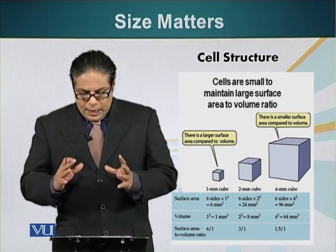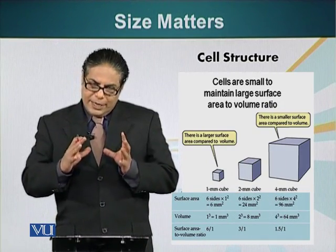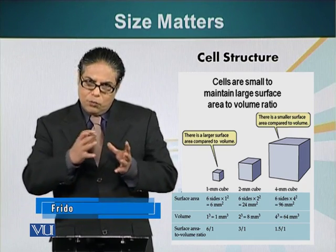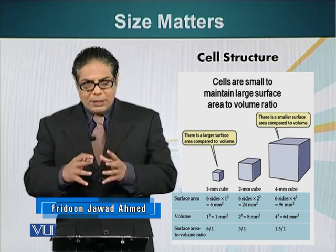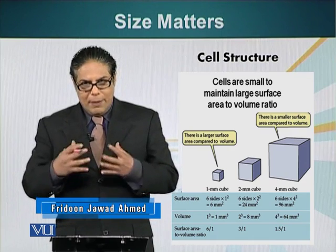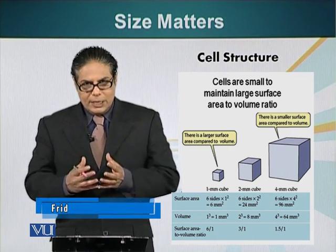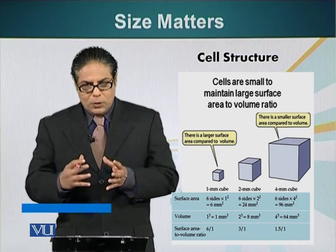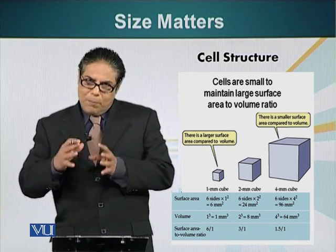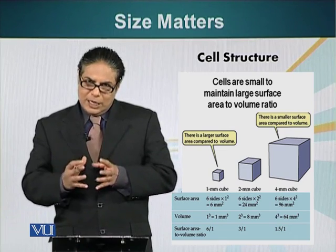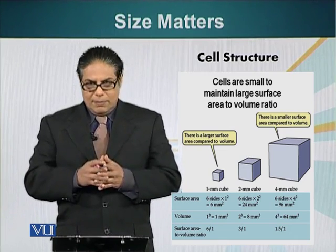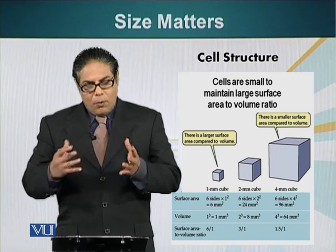Cells are small because they have to maintain a specific surface area to volume ratio. As the volume increases, so does the demand for raw materials and also the requirement that the waste products produced by the cell during metabolism have to be released outside the cell.